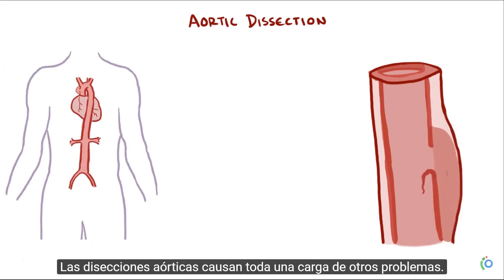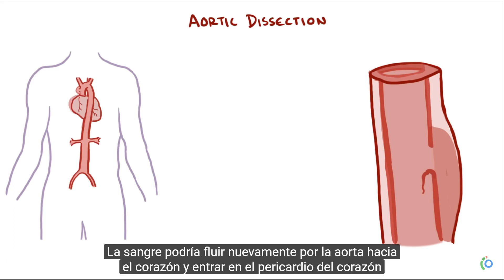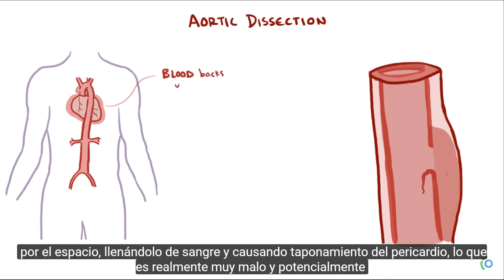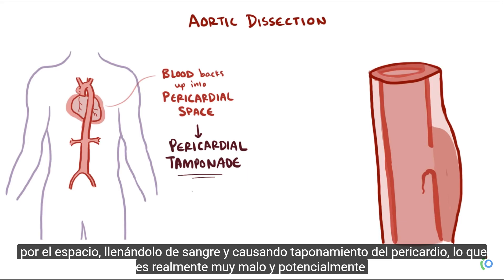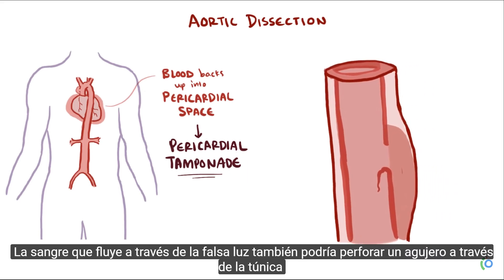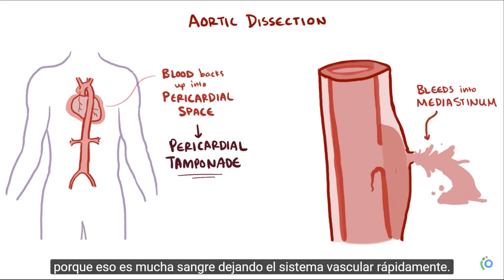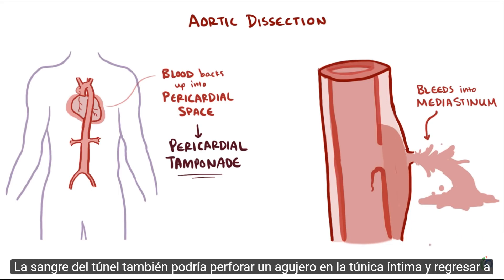Aortic dissections cause a whole range of other problems. A lot of complications are related to where the blood in the false lumen flows. The blood could flow back up the aorta to the heart and enter the heart's pericardial space, filling it with blood and causing pericardial tamponade — a really bad and potentially fatal situation. The blood flowing through the false lumen could also puncture a hole through the tunica media and tunica externa and bleed into the mediastinum, which would be fatal quickly because that's a lot of blood leaving the vascular system.